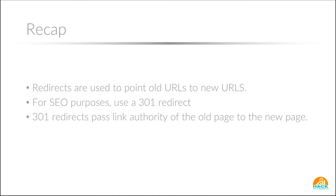Let's recap. We use redirects to point old URLs to new URLs, which is helpful so people can find your content in the right place. More importantly, you want to let the search engines know that your content has moved and where the correct place is to find it. This is a technical part of SEO but an extremely important one, and a lot of people don't do this correctly and lose a lot of the work they put in. Make sure you're using 301 redirects — only 301 redirects are going to pass link authority from the old page to the new page. If you have any questions, please comment below. Until next time, happy marketing.